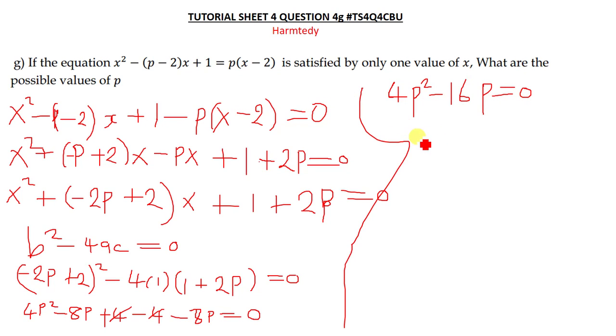So from here, what you can do is you simply factor out the 4p. Then you remain with p minus 4, and then this equated to 0.